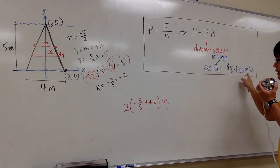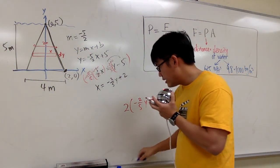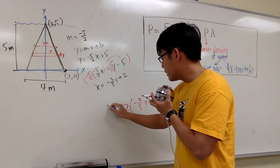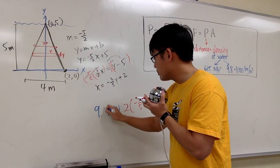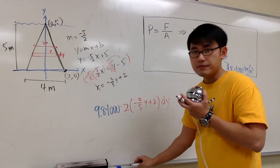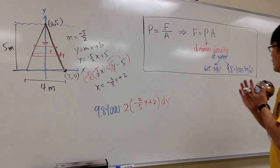But then, we move to the next thing, which is the density of the water. We need that. 9.8 times 1,000. So, I will multiply by 1,000 here, and then multiply by 9.8 here.